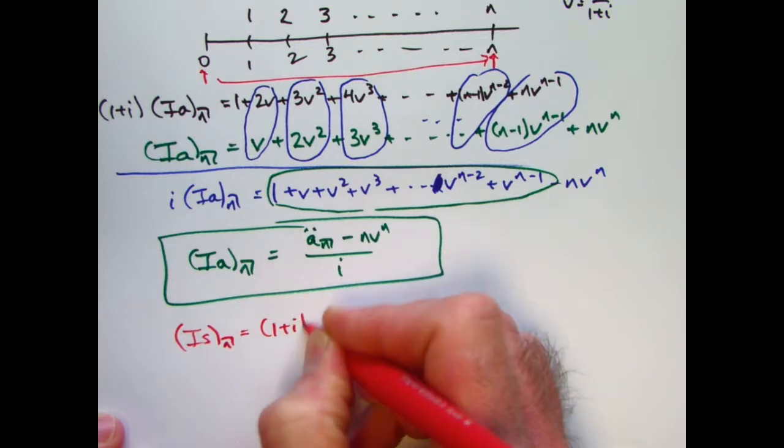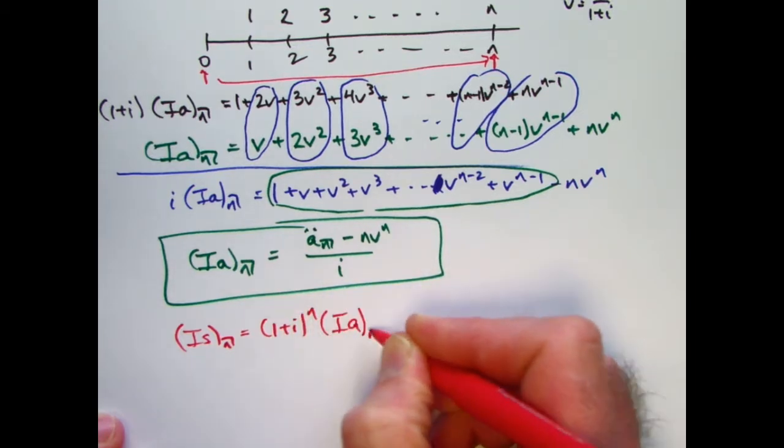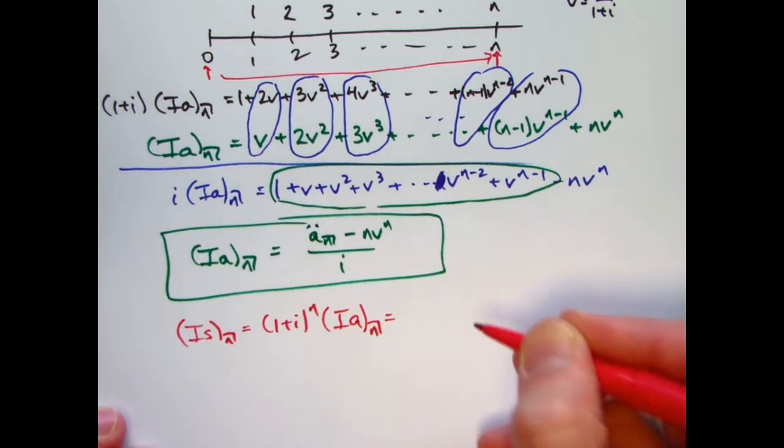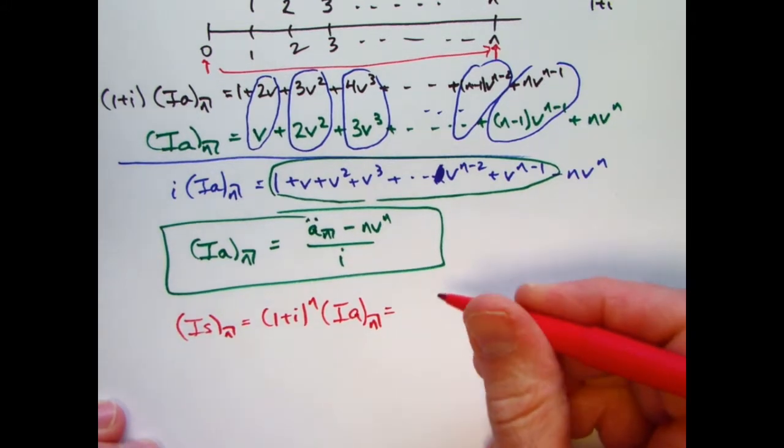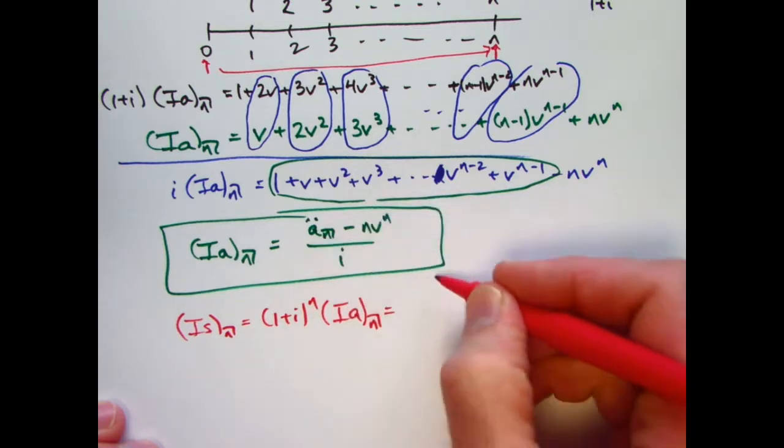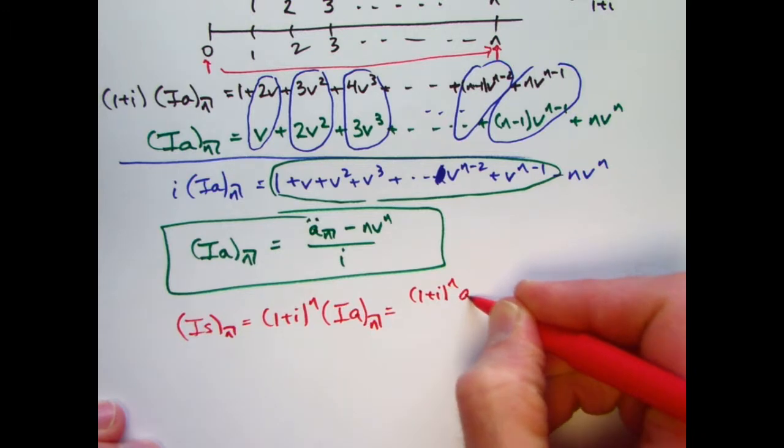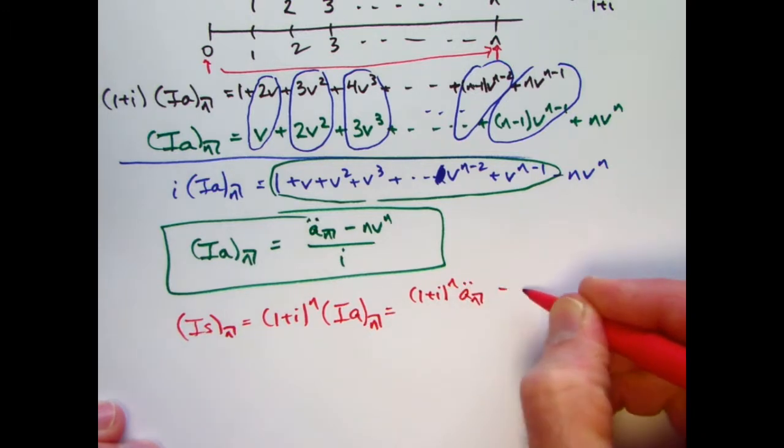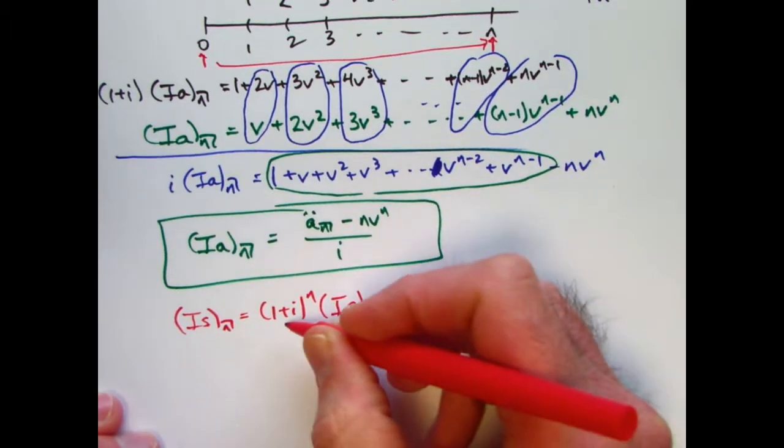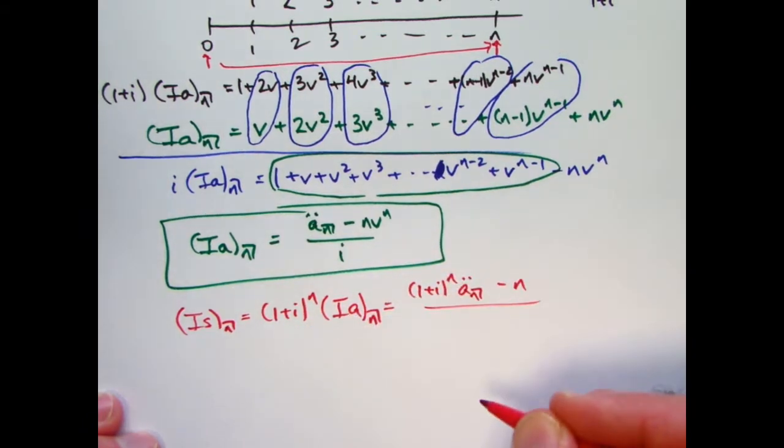And when you multiply 1 plus i to the n times this fraction, it goes through the top. So you get 1 plus i to the n times a_n double dot, minus nv to the n times 1 plus i to the n, you're going to get complete cancellation to 1. So that simplifies to minus n. The bottom stays the same.